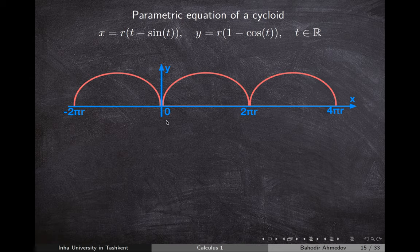This curve is called the cycloid. The parametric equation of the cycloid is given as: x = t - sin(t), y = 1 - cos(t). By choosing different values of t, we can find points on the curve. For example, if t ranges from 0 to 2π, we define all the points on one arch of the cycloid.